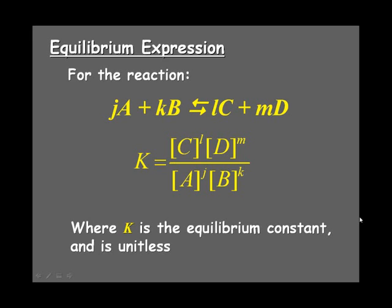Now K then is called the equilibrium constant, and it is constant for a particular reaction at a particular temperature. So the concentrations can change within the expression, but the overall mathematical value of K stays constant at a particular temperature, and it is treated as a unitless value.